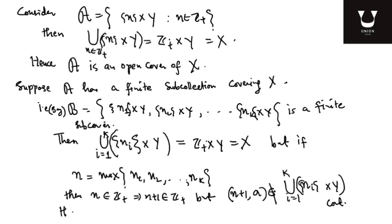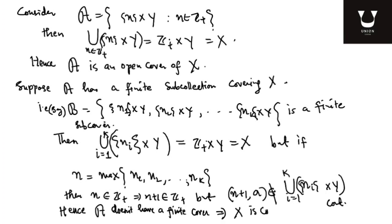We got a contradiction because of our assumption that this open cover has a finite subcover. Hence script A does not have a finite subcover, which implies X is not compact, because I found an open cover of X which does not have a finite subcover. This implies that X is not compact.